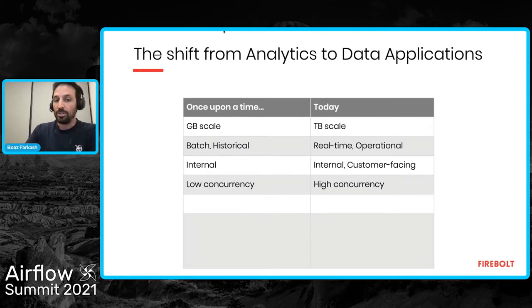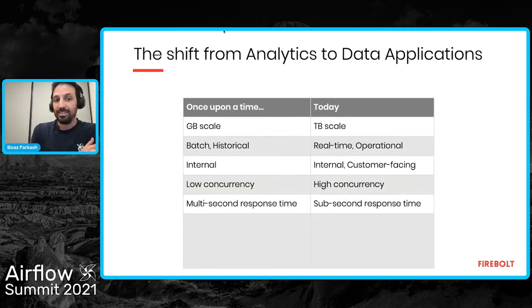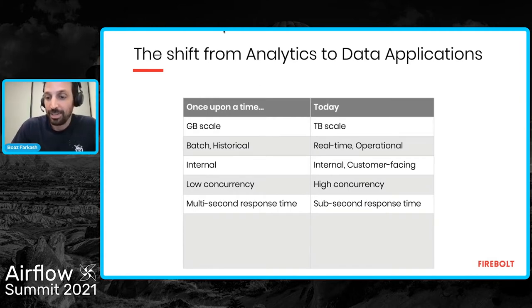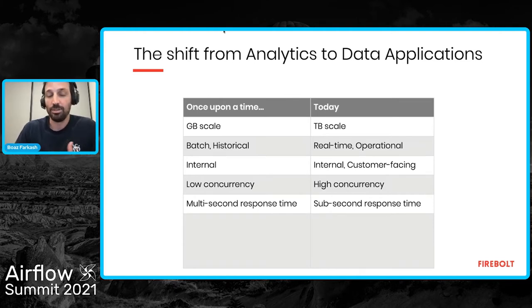Concurrency has changed too — if in the past analytics was internal and used by some, today many more users rely on it, and because it's gone customer-facing, concurrency has become more challenging. And if in the past we were okay with analytics taking five to ten seconds or more, today for operational and customer-facing use cases we want a much faster experience. I typically say: if an analyst waits 15 seconds for a query, nobody loves it but we're not necessarily willing to spend money to fix it — whereas when we serve analytics to customers, we really need sub-second.